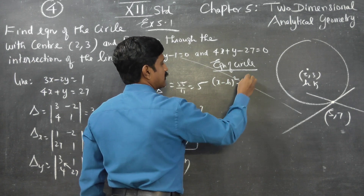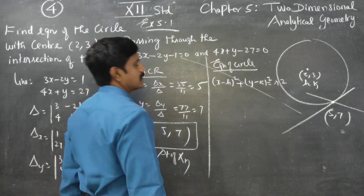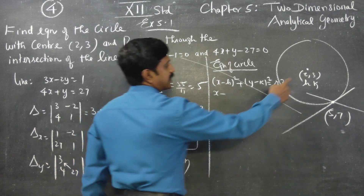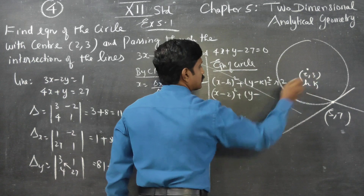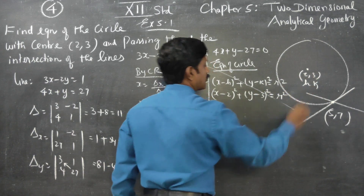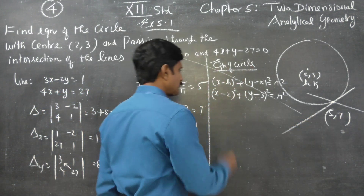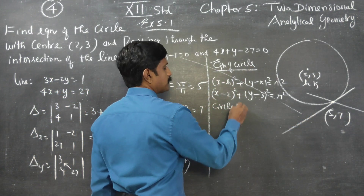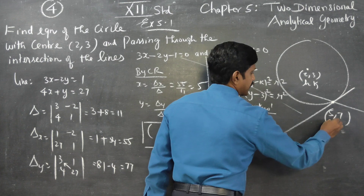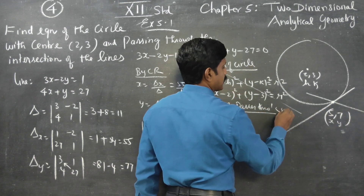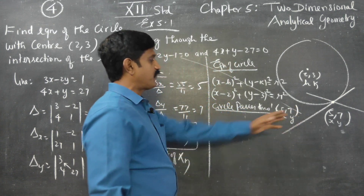Substituting the center (h, k) = (2, 3): (x minus 2) squared plus (y minus 3) squared equals r squared. I need to find r. The circle passes through the point (5, 7), so this is our x and y. Instead of x and y, we substitute 5 and 7.